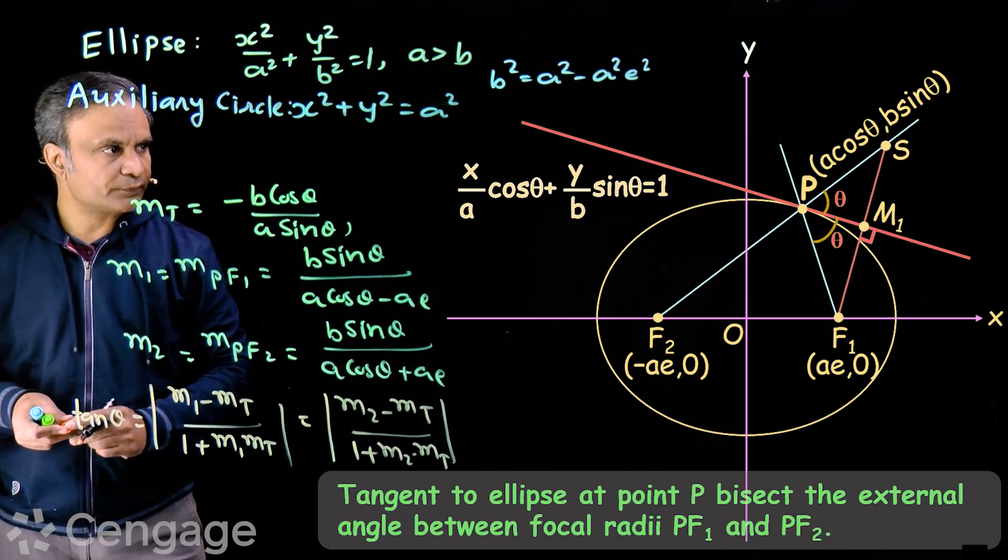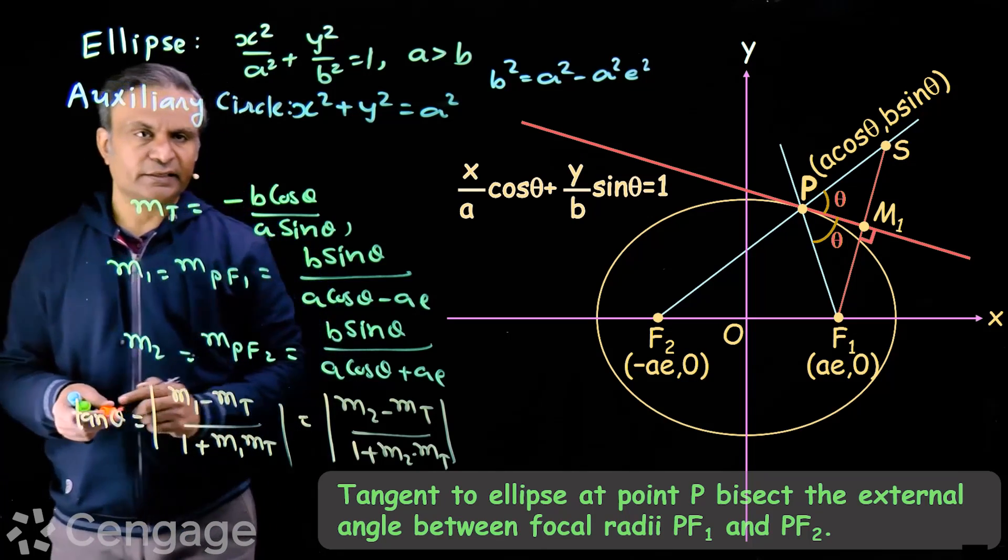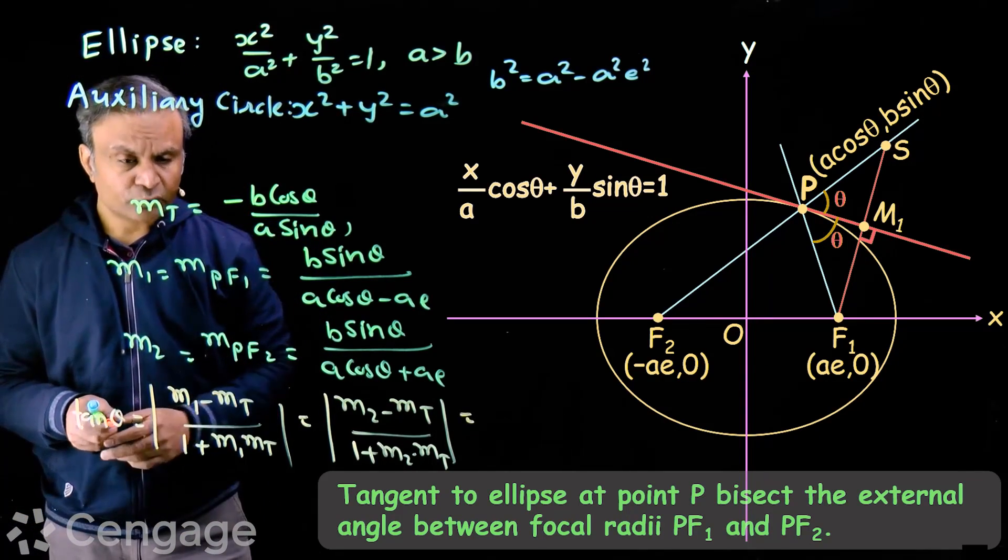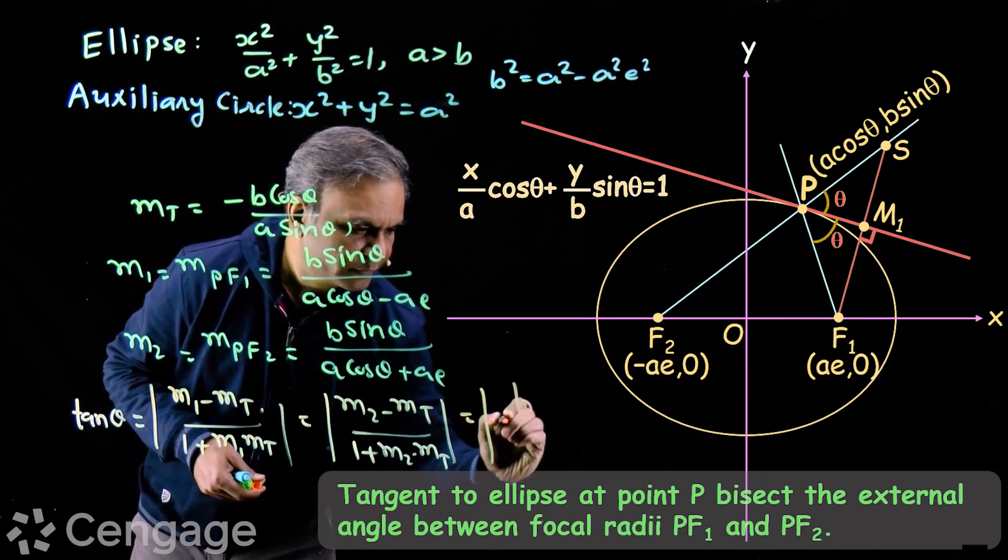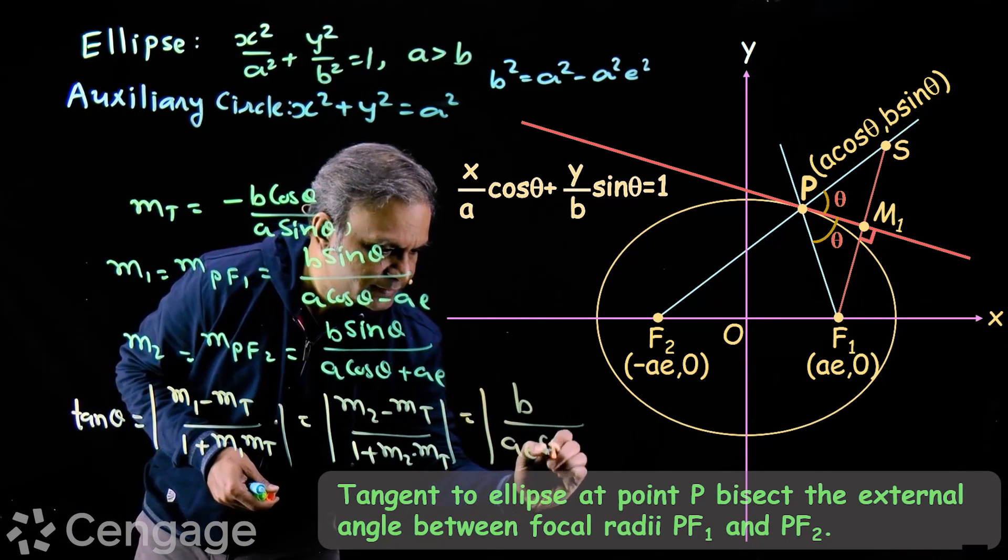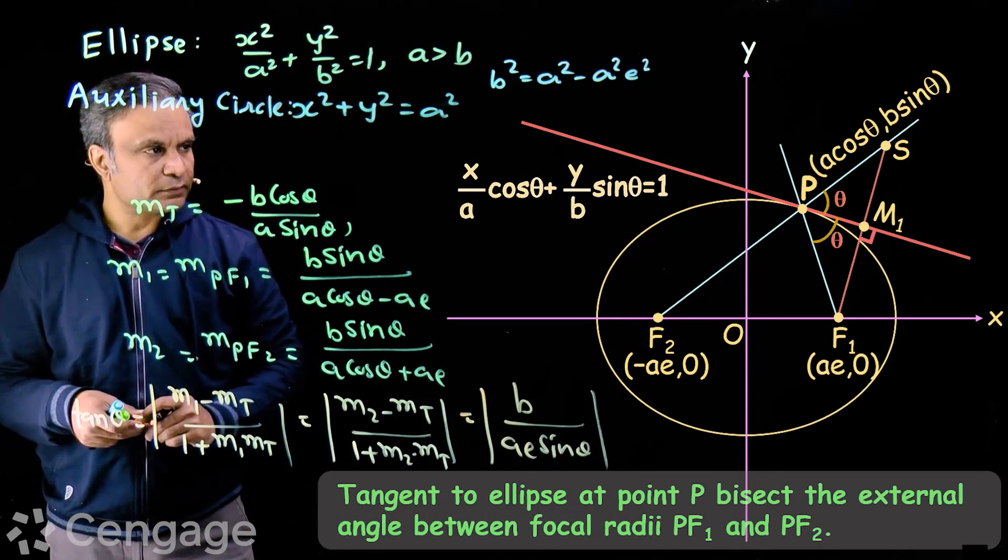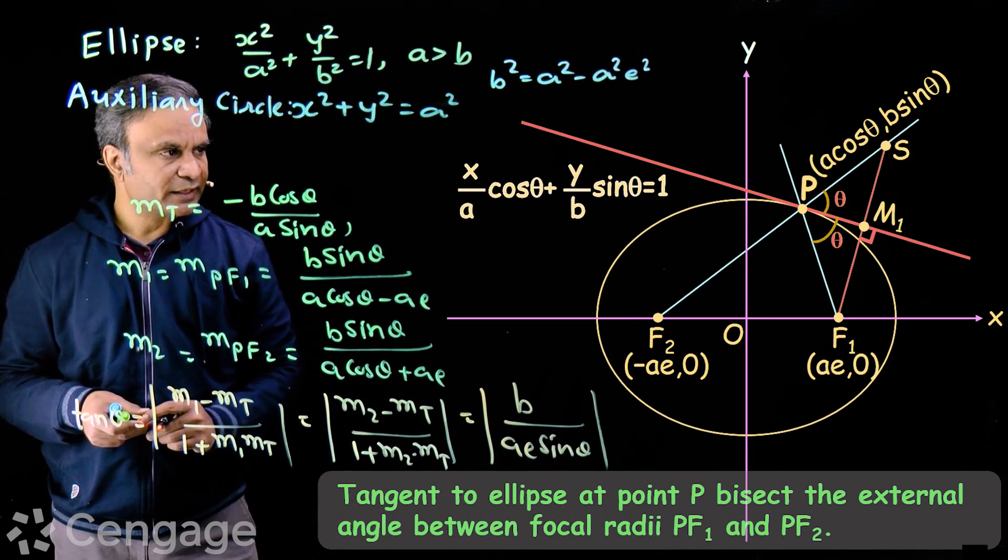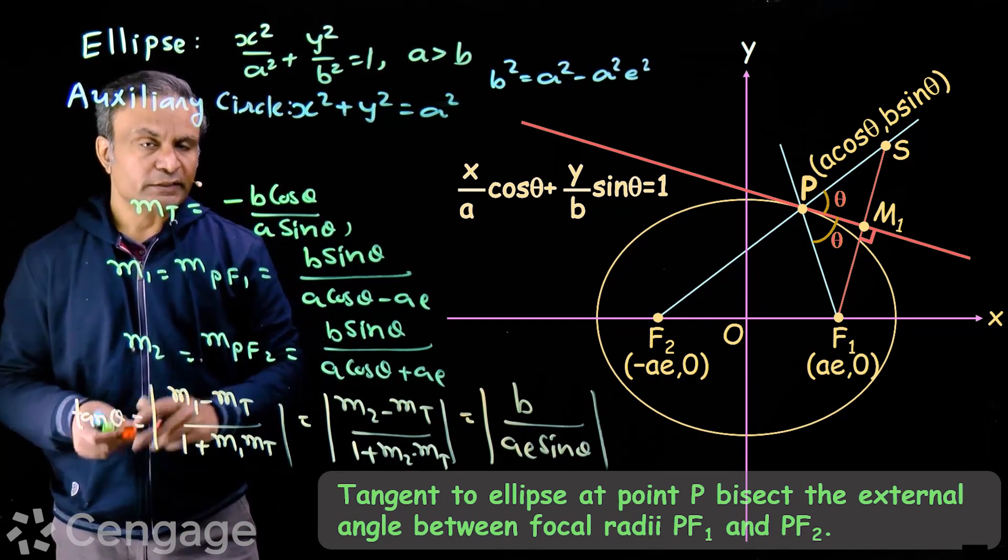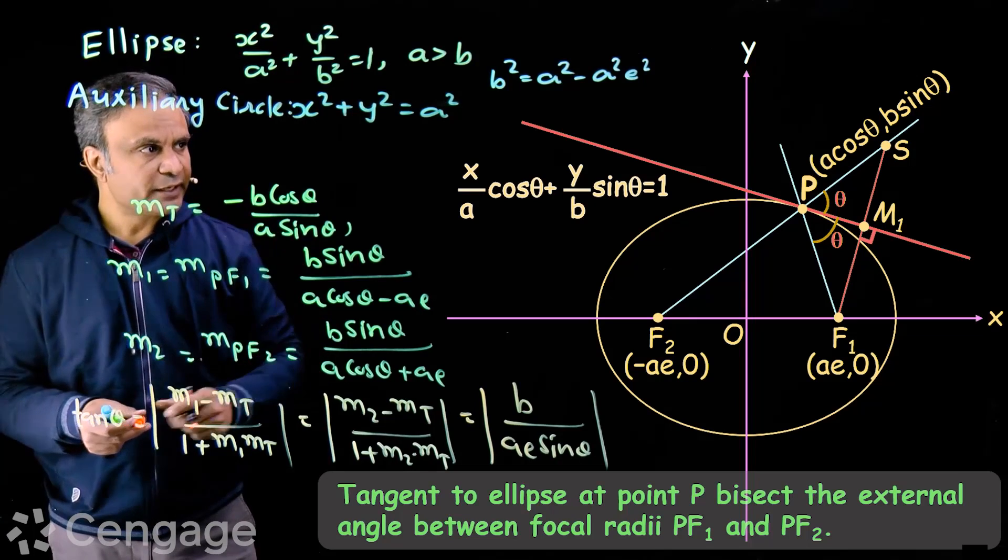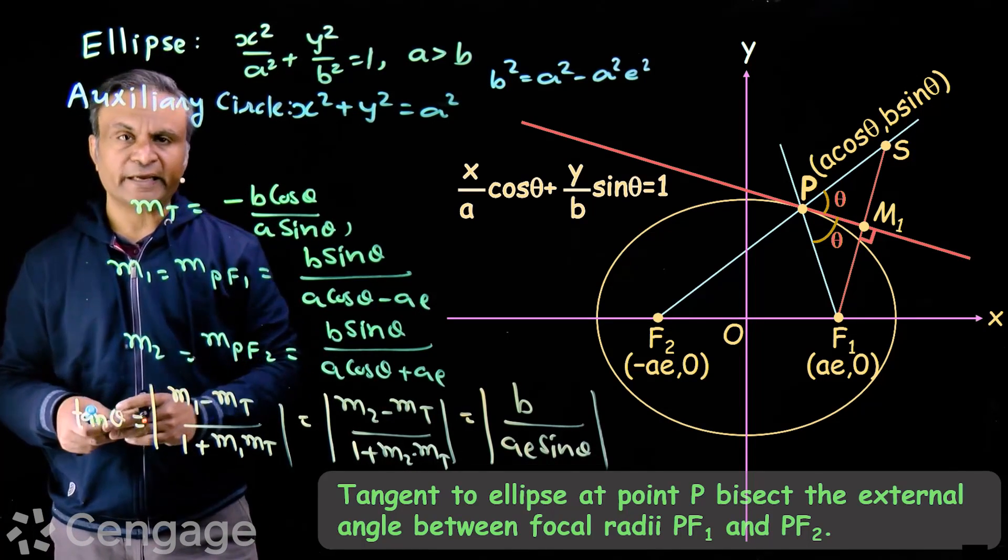We can easily prove that these two values are equal and each value is modulus of B upon Ae sin theta. That means angle between PF1 and tangent line is equal to angle between PF2 and tangent line. That means tangent bisects the external angle between focal radii PF1 and PF2.